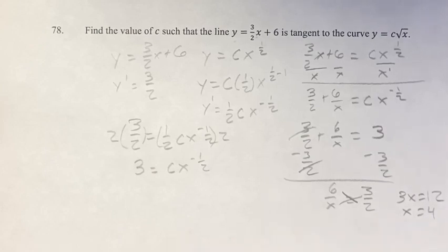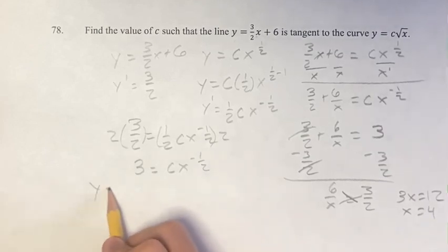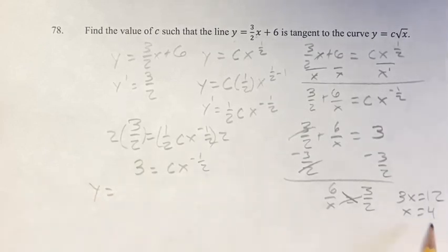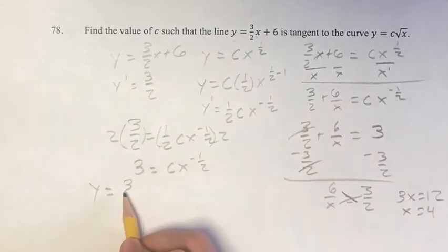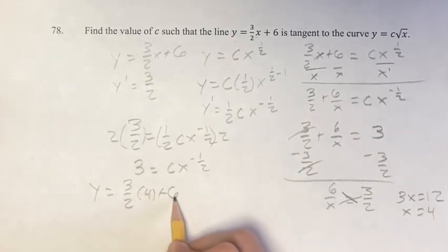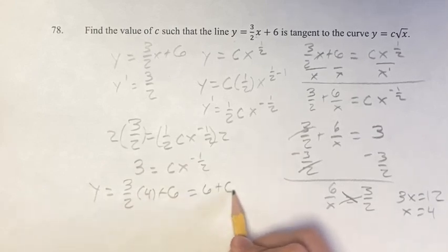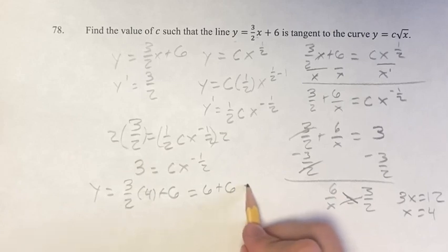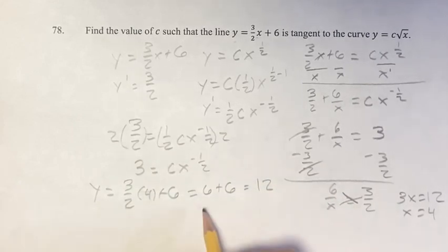So this is the x value of the point of intersection. If you want to find the y value, we can plug in 4 to this. So 3 halves times 4 plus 6. This is 6 plus 6, and that's 12. So the point is 4, 12.